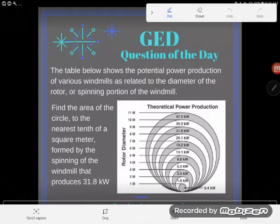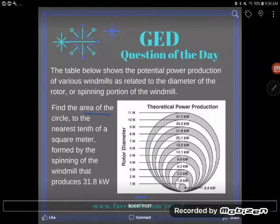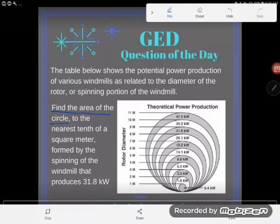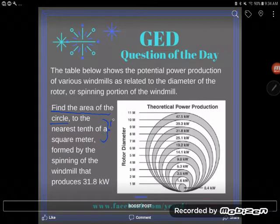And it says find the area of the circle - this is what I'm finding - to the nearest tenth of a square meter. This is rounding directions here. That rounding language, to the nearest tenth, I always leave rounding directions till the end of my problem. That's always the final thing you do.